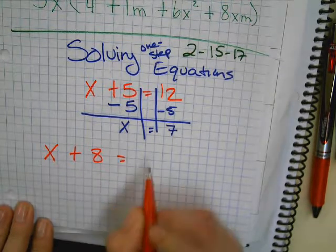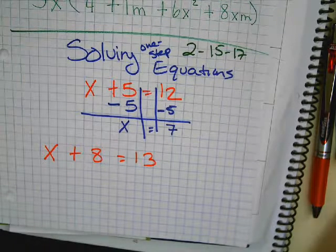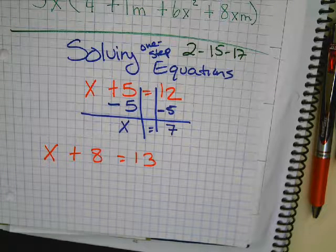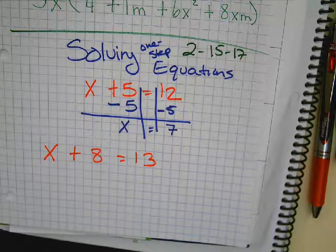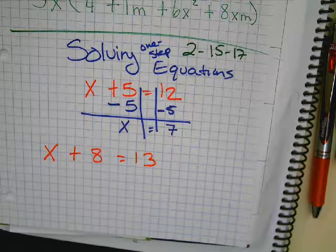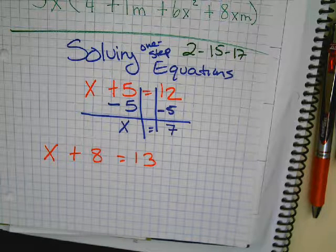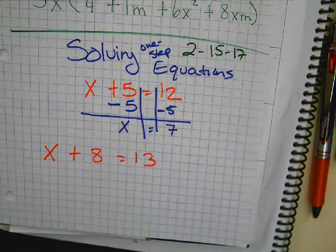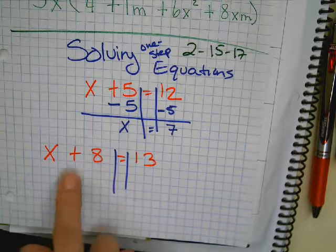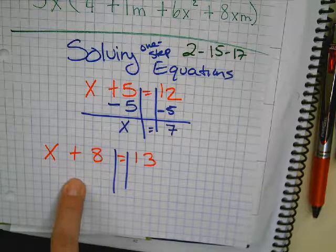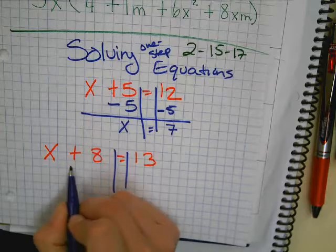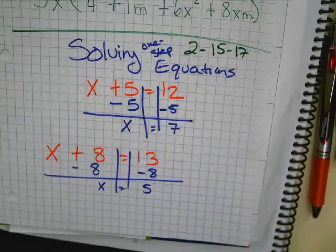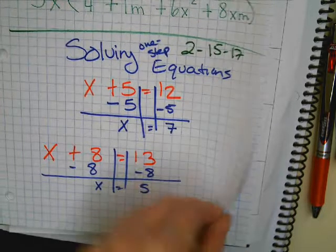X plus 8 equals 13. Can you solve this one showing work, please? We're just practicing showing work. Go ahead and do it before I do it. Did you draw the bars? Did you look at the operation and write the opposite on the bottom? What did you get? X equals 5. Good job.